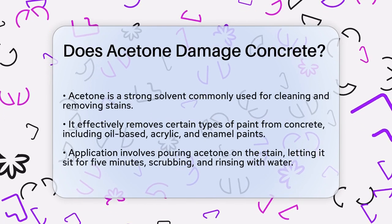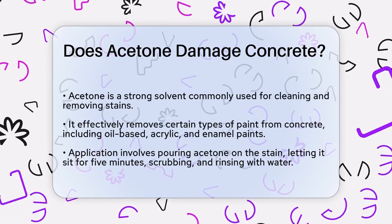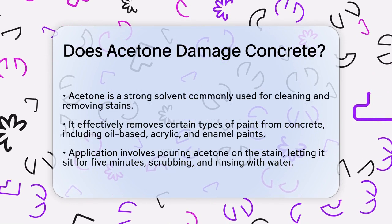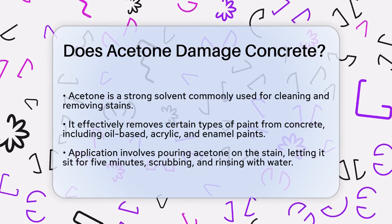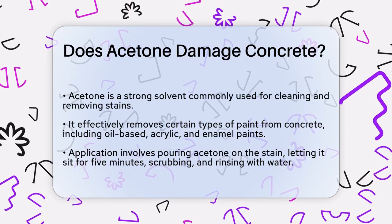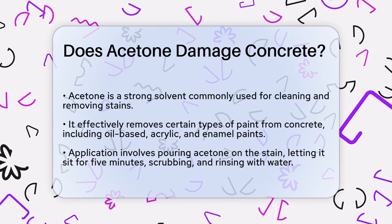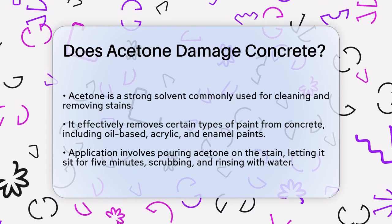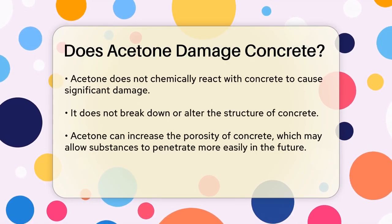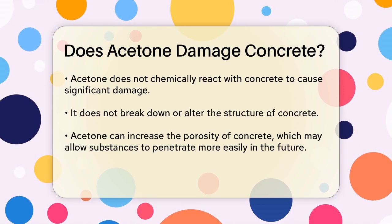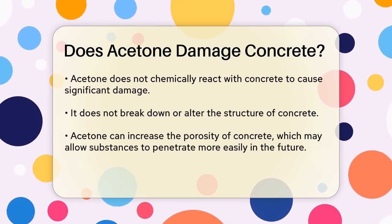First, acetone is a strong solvent, often used for removing paint, adhesives, and other substances from surfaces. When it comes to concrete, acetone can be used to remove certain types of paint, such as oil-based, acrylic, and enamel paints. To do this, you pour acetone directly onto the paint stain, let it sit for about five minutes, and then scrub the area with a stiff-bristled or wire brush before rinsing thoroughly with water.